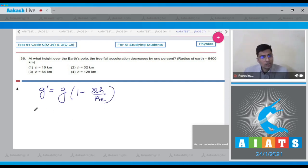It is given that g' is 1% less than g, which means that g' will be equal to g into 99 by 100. This will be g into 1 minus 2h by Re.